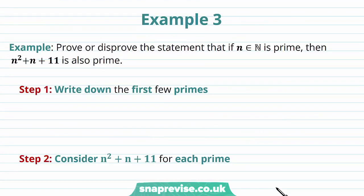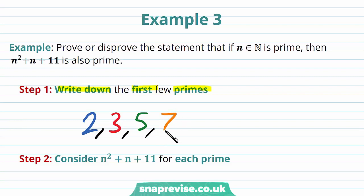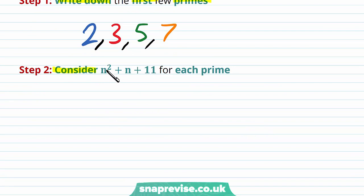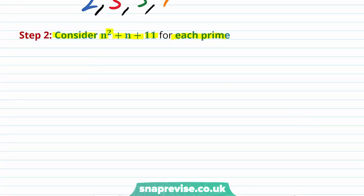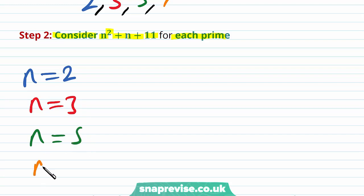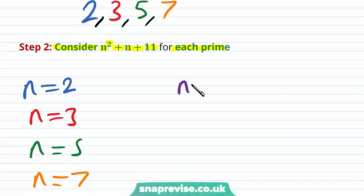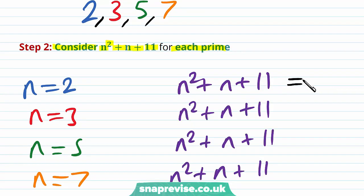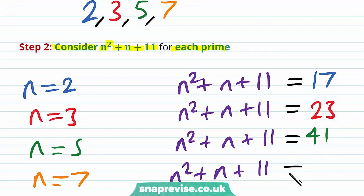Our last example asks us to prove or disprove the statement that if n is a natural number and prime, then n squared plus n plus 11 is also prime. Our first step is to write down the first few primes: 2, 3, 5, and 7. Our second step is to consider n squared plus n plus 11 for each prime. For n equals 2, we get 17. For n equals 3, we get 23. For n equals 5, we get 41. For n equals 7, we get 67.